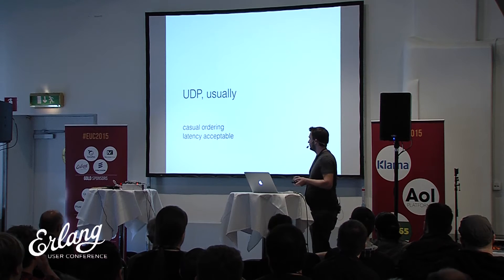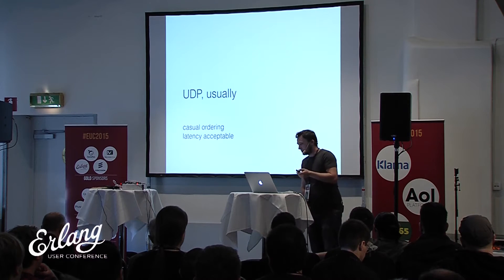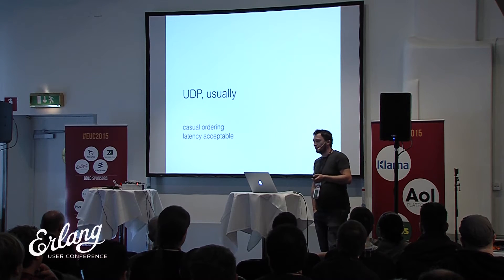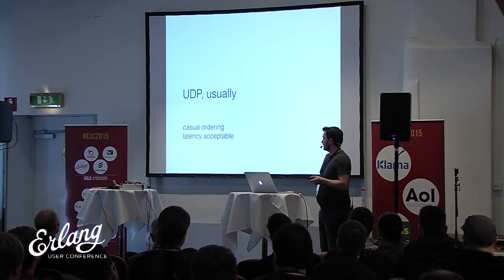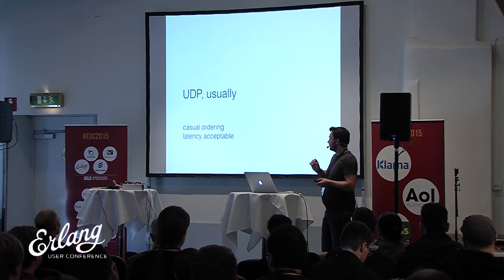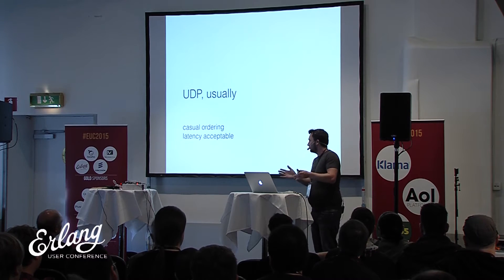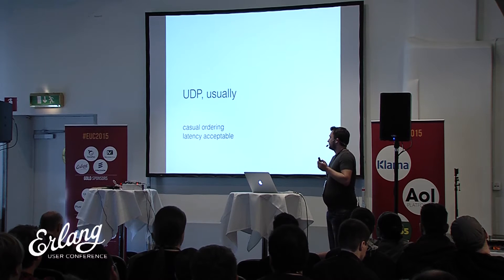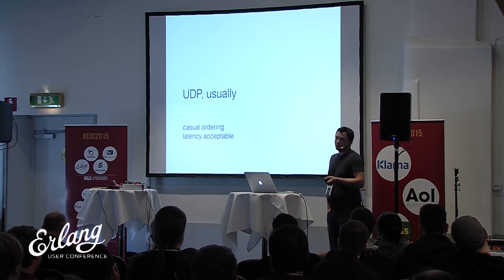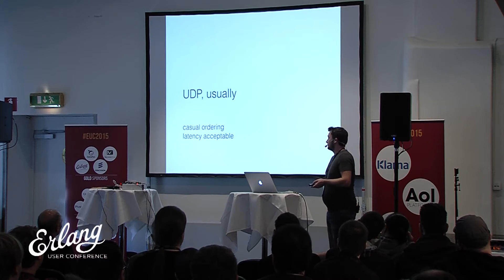Usually we use UDP for gossip protocols. In the dissemination protocol, we pass events or background data. The order of those events is not really that important, and losing some of those events is acceptable given the nature of how gossip works. We can afford losing some data. The latency needs to be acceptable, and the data will not necessarily be real time.